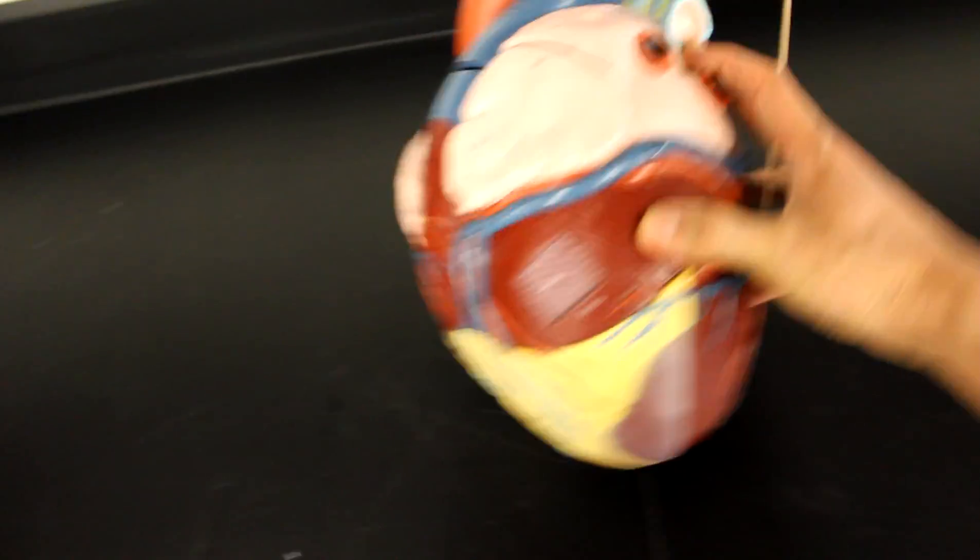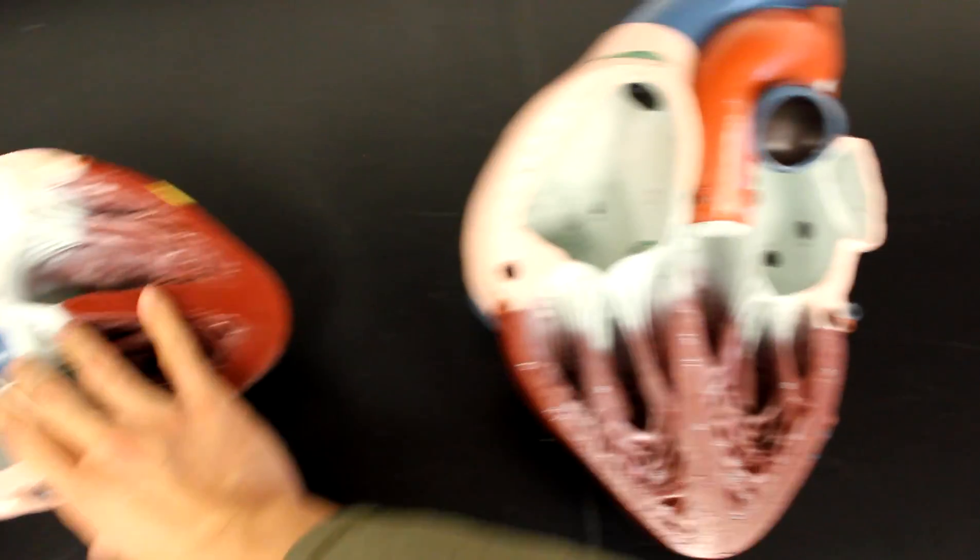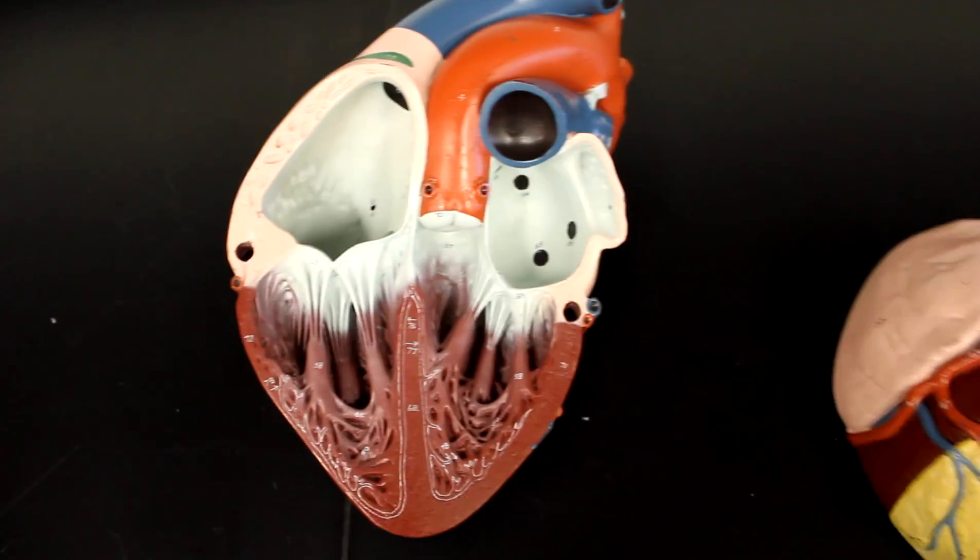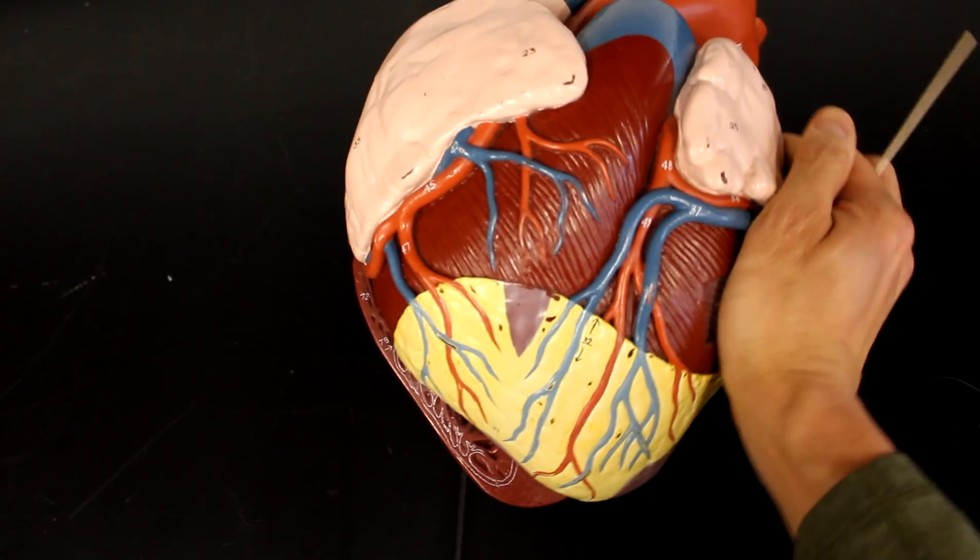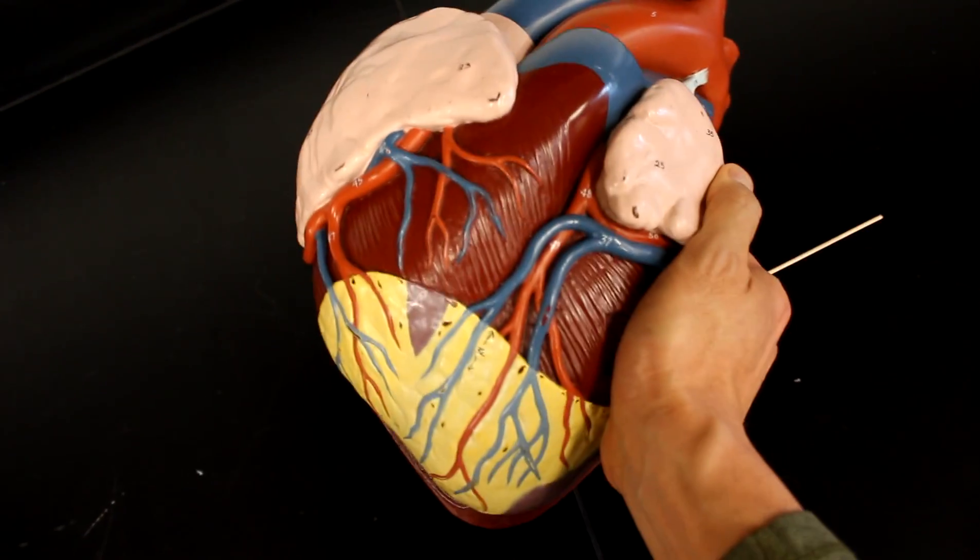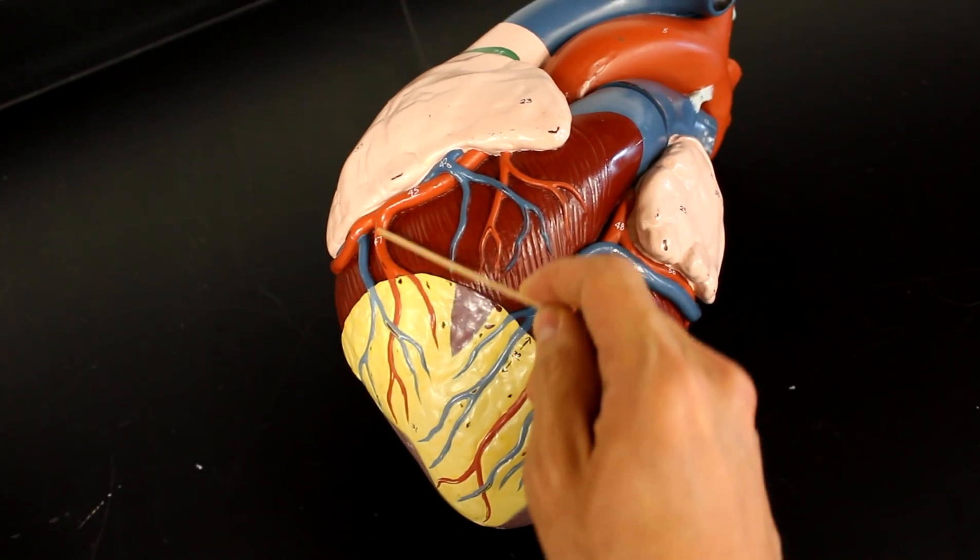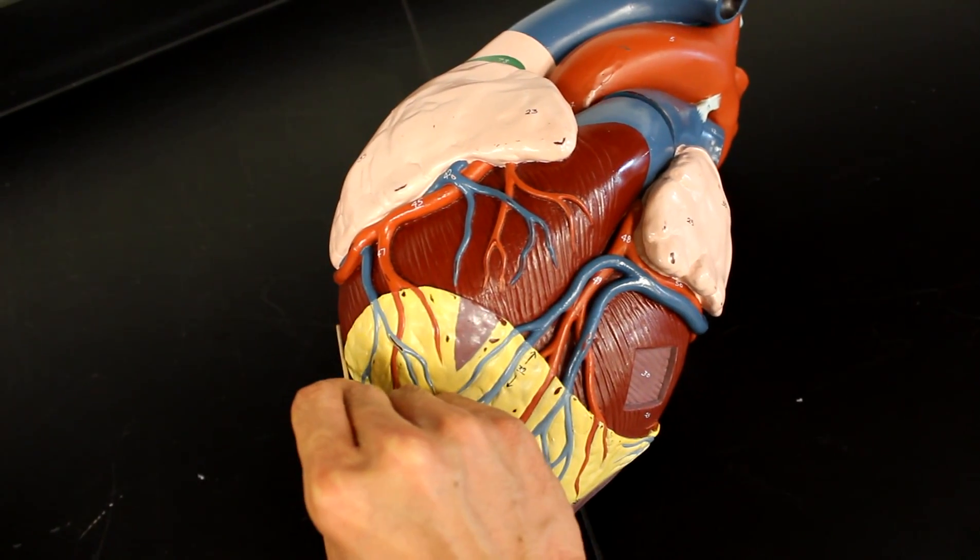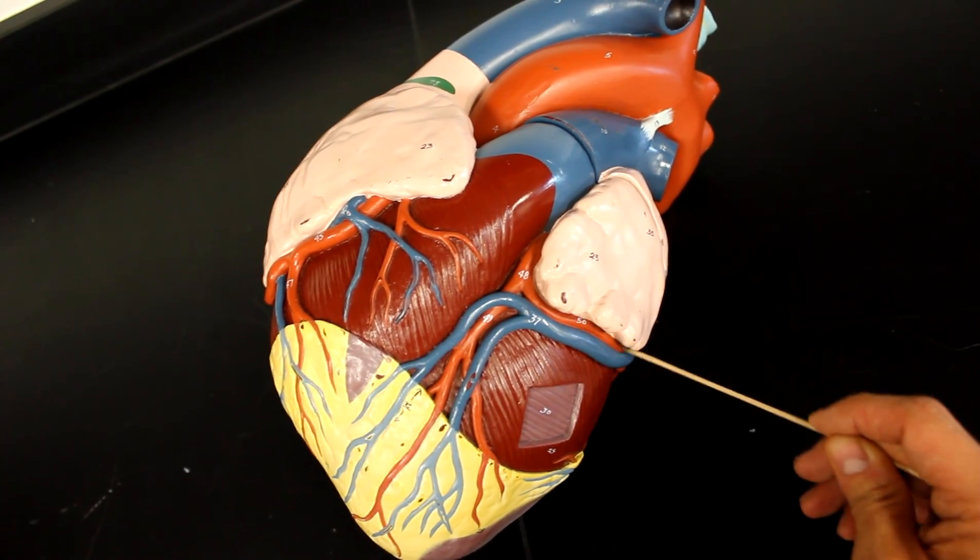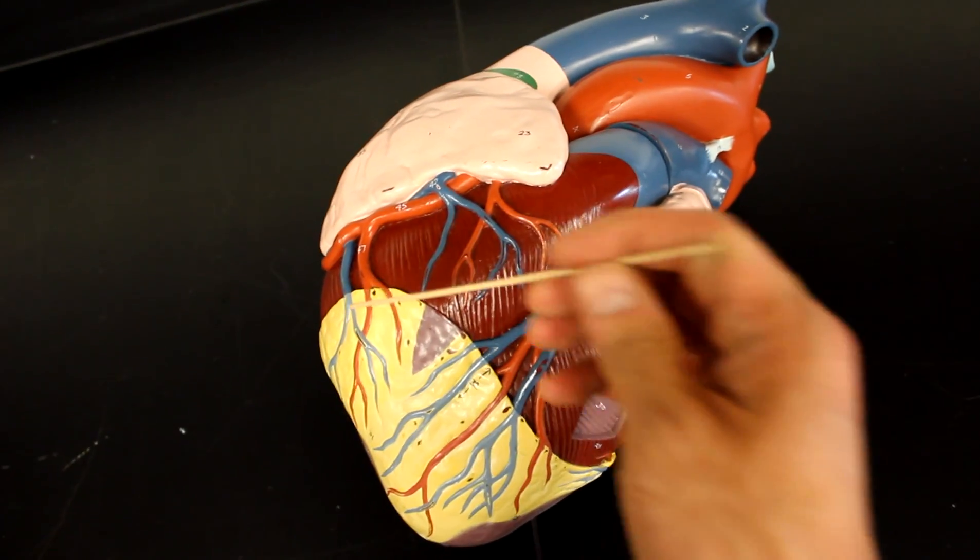So a quick review. As we take a look at this, right and left coronary arteries extend from the aorta. The right gives off the marginal branch and the posterior interventricular branch. The left gives the anterior interventricular branch and the circumflex branch.